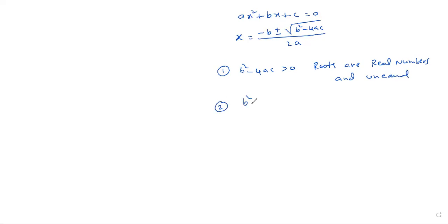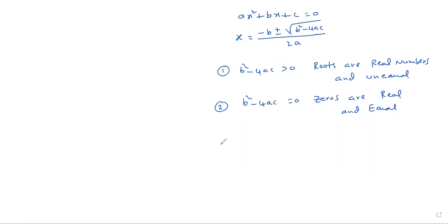The second point: if B² − 4ac is equal to 0, the zeros or roots are real and equal. That means, without finding the roots, you can tell the nature of the zeros by observing the value of B² − 4ac. If B² − 4ac is less than 0, the zeros or roots are complex numbers.